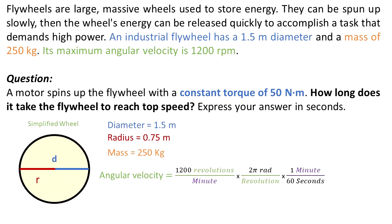First, I'm going to convert the angular velocity. One revolution is 2π radians and one minute is 60 seconds. Revolutions cancel out with revolutions and minutes cancel out with minutes. We get that angular velocity is 40π radians per second or 125.66 radians per second.